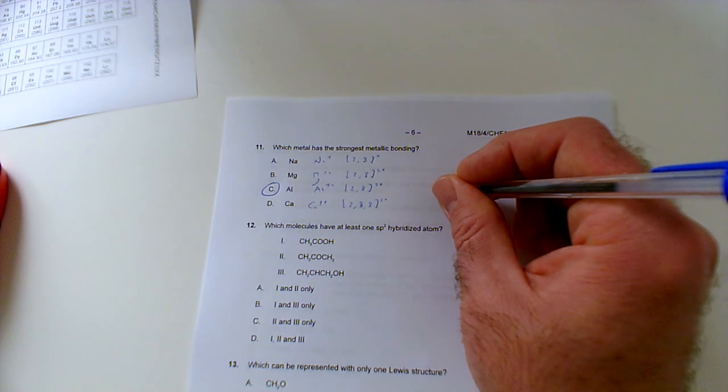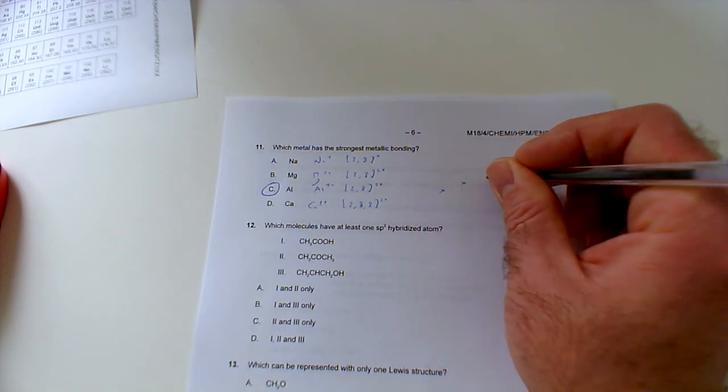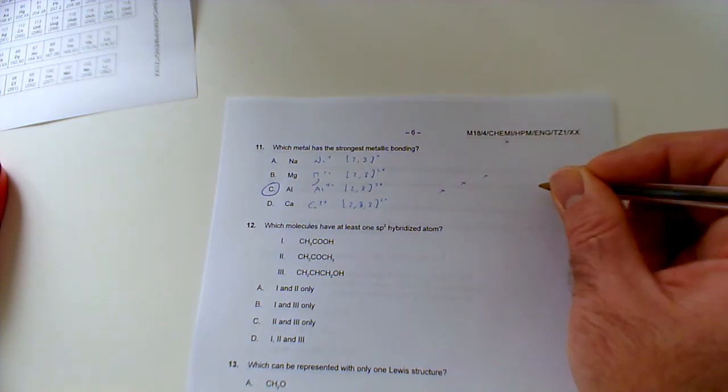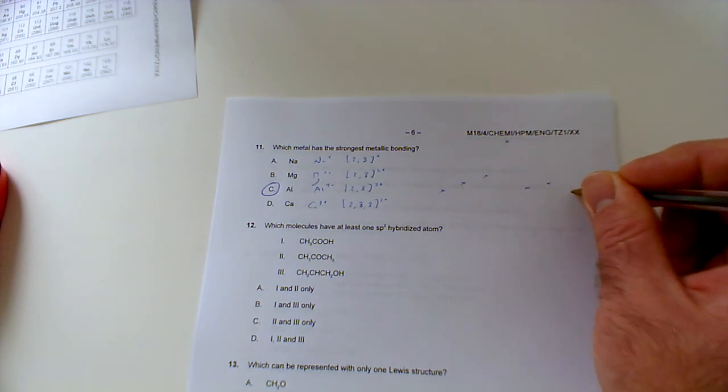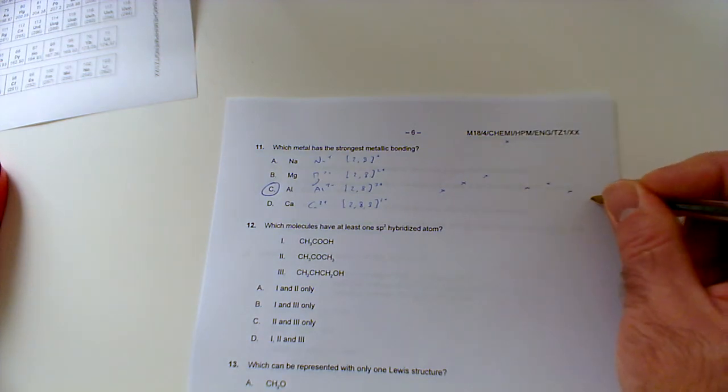If you remember, that's the trend as you go across period three anyway. You get sodium up to magnesium, up to aluminium, jumps up to silicon, and then comes crashing back down for phosphorus, up a little bit for sulfur, down for chlorine, and down for argon if you're familiar with your melting points.